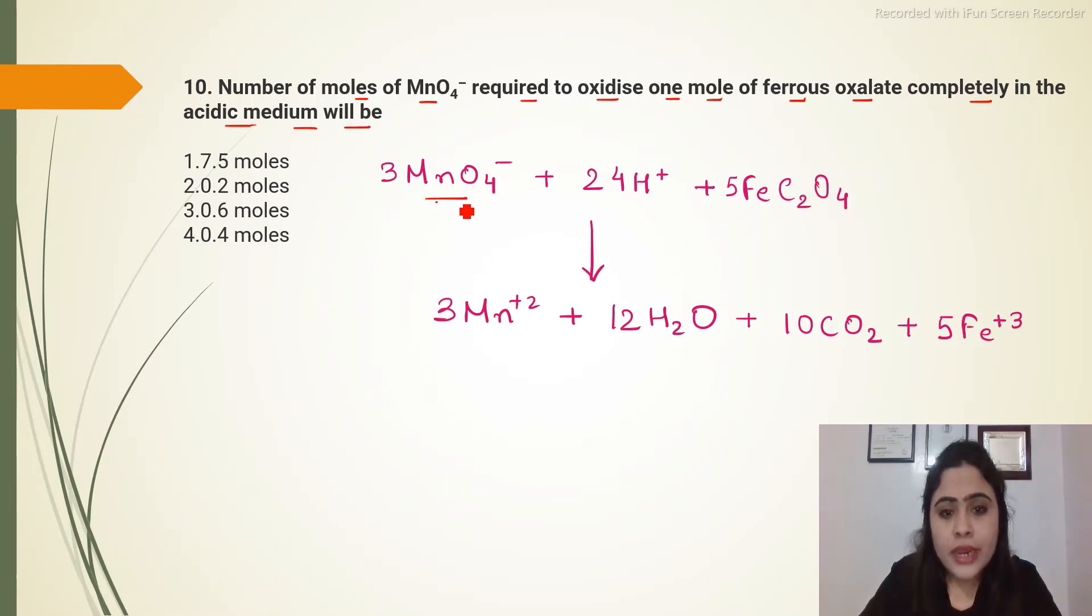MnO4- in acidic medium will have H+, ferrous oxalate is oxalate FeC2O4 2-, so this is ferrous oxalate. To oxidize the ferrous oxalate, we are using the oxidizing agent potassium permanganate KMnO4.